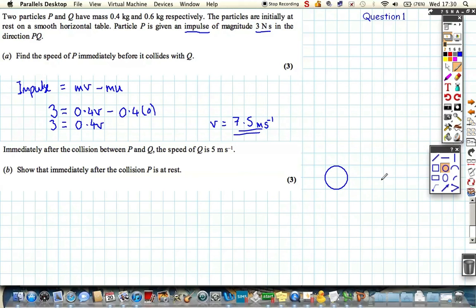So if we draw particle P, and we draw particle Q, we know that P is travelling with 7.5 before, and immediately after the collision between P and Q, the speed of Q, well, let's draw arrows assuming they're all travelling, and let's add the numbers on.